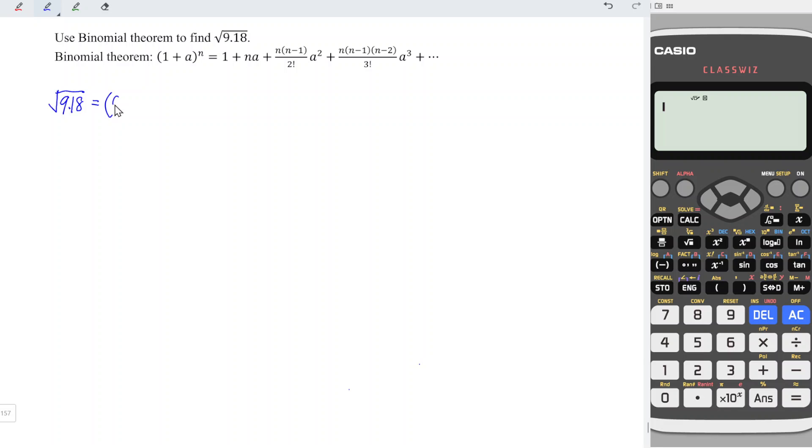We know that square root is simply to the power 1 over 2, and we can express this decimal number as an addition of two numbers, which is 9 plus 0.18, and the whole thing to the power 1 over 2.